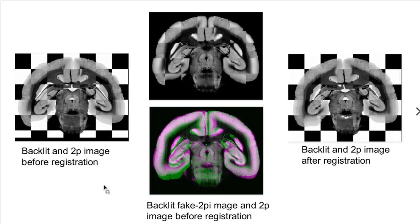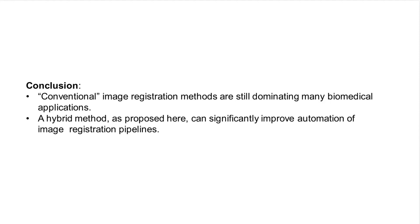Here you can see an example of our results. On the left side you can see the two-photon image together with the bright-field image — they are not aligned. In the middle, also the unaligned image but after image-to-image translation, shown as a checkerboard and with two different colors, and then after alignment.